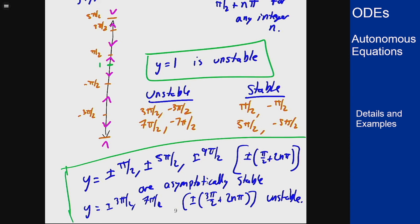Look at the phase line, look where things are going in or out, and use that to determine whether things are stable or unstable.